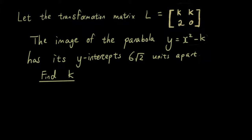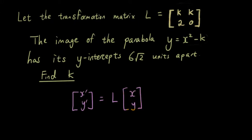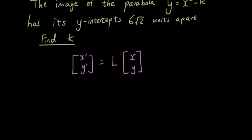The first thing you do is write down the matrix transformations general equation: the image of the transformation equals the transformation matrix times the original point (x, y). Whenever you're transforming a curve, in order to find the image of the curve, you rearrange this equation so you get L inverse multiplied by the image equal to the original point.